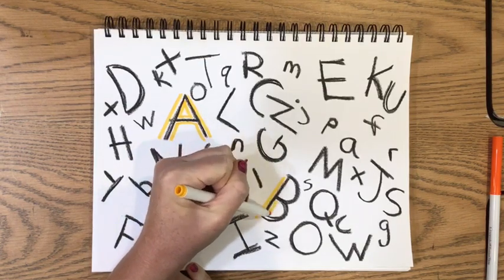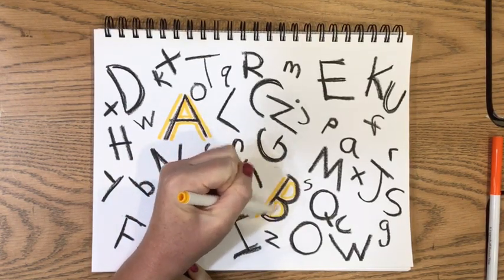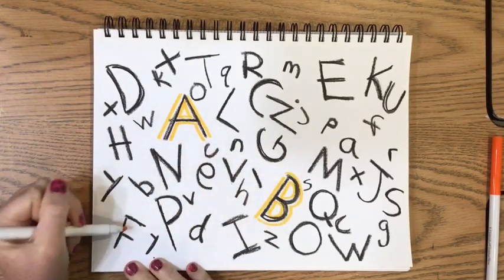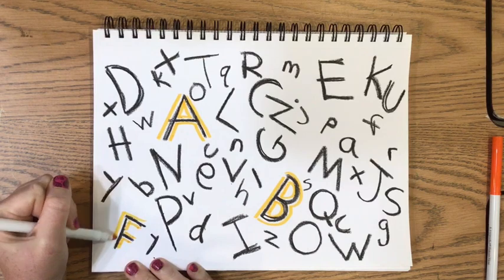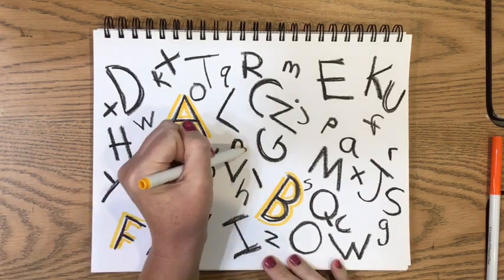So we're going to practice drawing our lines today with not only a black crayon but also a marker. Think about if the line is straight, if it's curvy, or if it's kind of zigzag.